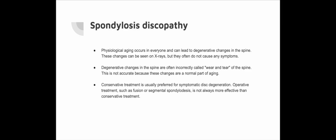Initial treatment of disc disease is conservative, focused on patient education, exercise and pain medication. The natural history of disc disease is favourable and most patients improve with conservative treatment. If conservative treatment fails, spondylodesis — a surgical procedure that fuses two vertebrae together — may be considered. However, there is no convincing evidence that spondylodesis is more effective than conservative treatment, and no relationship has been demonstrated between a positive pain provocation during discography and a good result after spondylodesis. Great restraint with regard to this form of surgery is therefore appropriate.